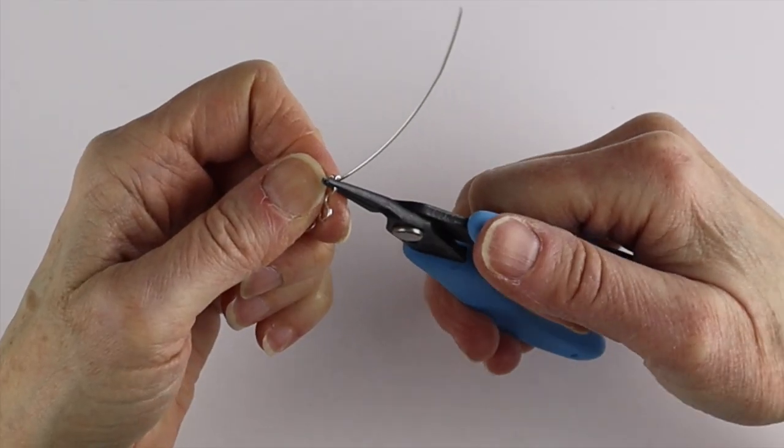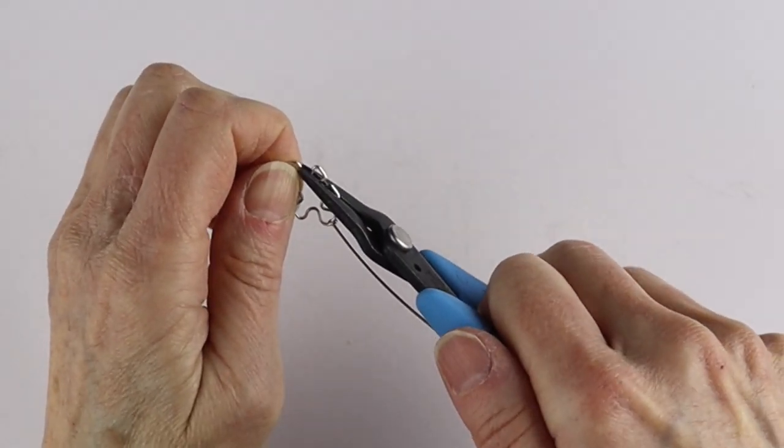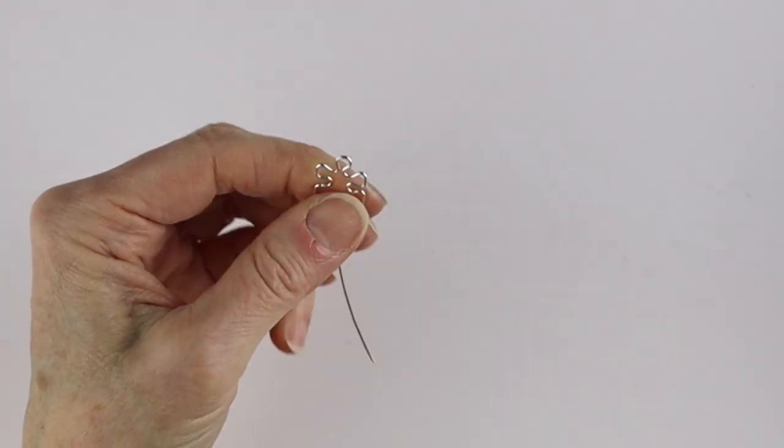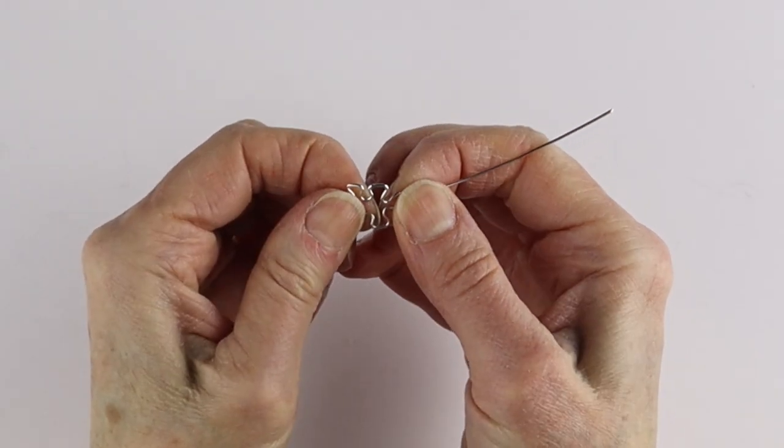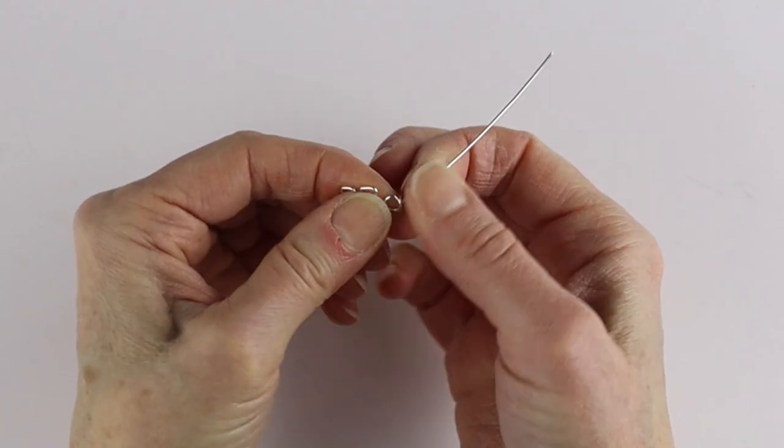Clip it, pinch it closed and then with the flat pliers you can just straighten it out a bit, flatten it out. You can hammer it if you want to as well and then bend that to the back.